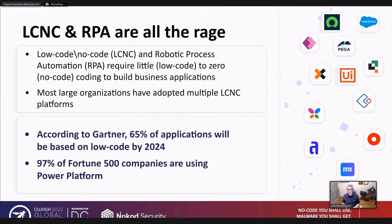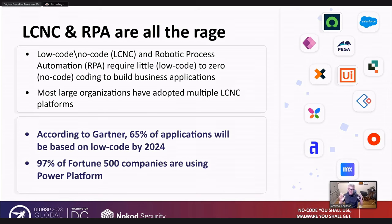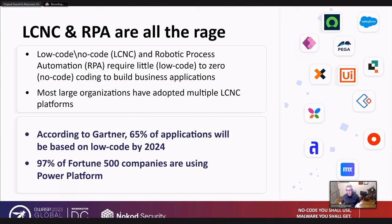We are going to talk about application security and the low-code, no-code application era. You probably know some of the names: Microsoft PowerApps, OutSystems, Mendix, or UiPath. All these big names are low-code, no-code platforms. What low-code, no-code platforms and practices together with RPAs — the robotic process automations — are all about is enabling organizations to create more business applications and more automated business processes in a distributed way, by people who are not necessarily software engineers, without writing actual code.